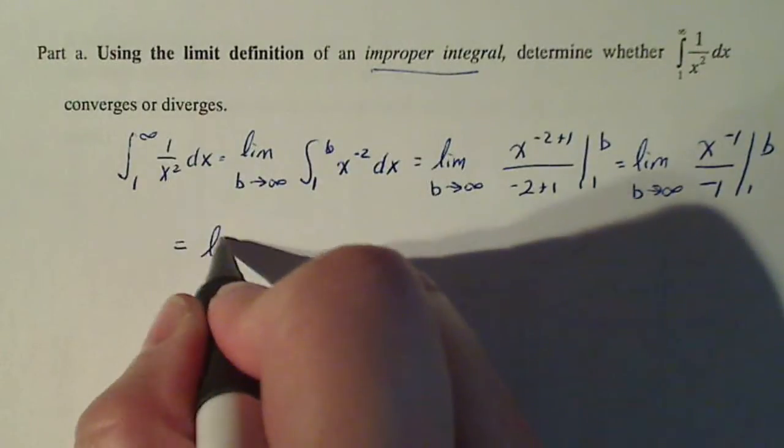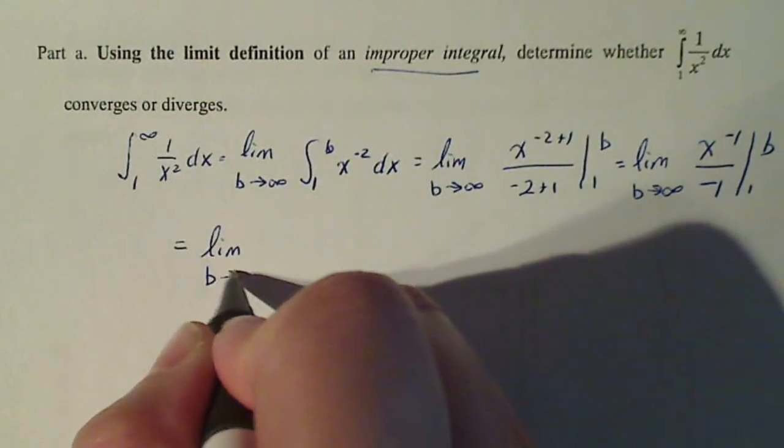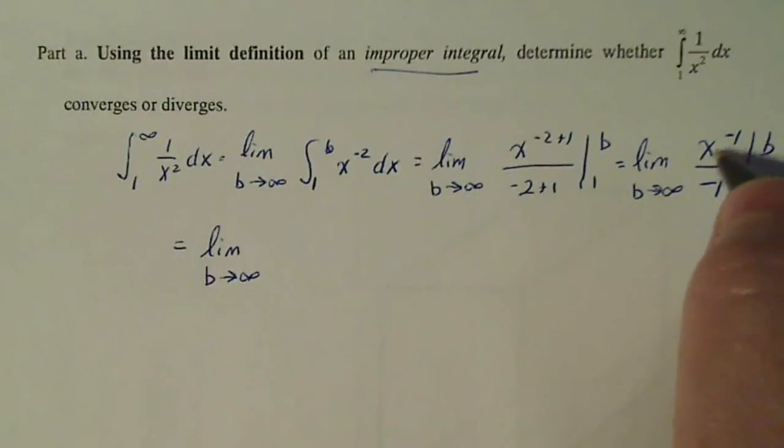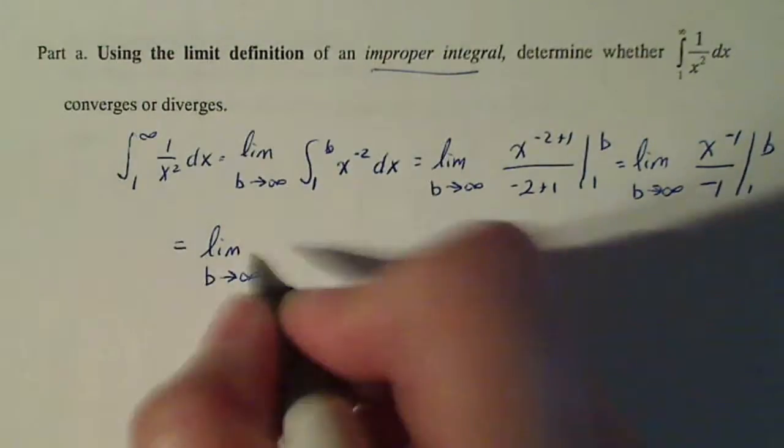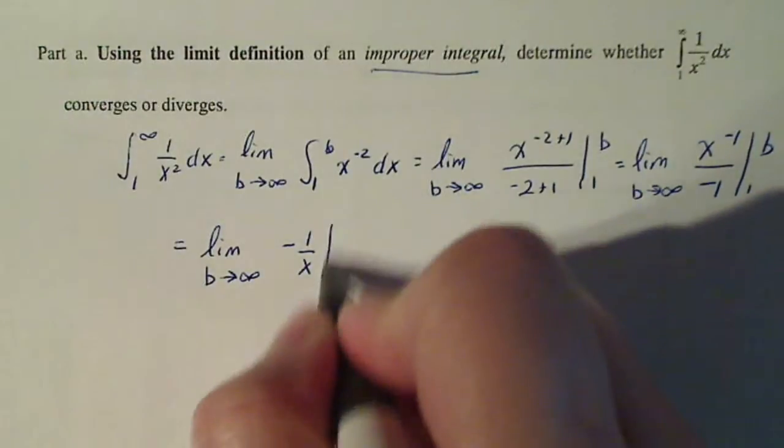Again, you want to simplify this as much as possible. That's why I'm taking my time here. Simplifying this, this is one over x and that just makes this whole thing negative. So it's minus one over x from one to b.